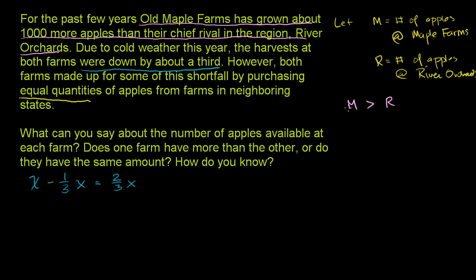So going down by a third is the same thing as multiplying the quantity by 2/3. So if we multiply each of these quantities by 2/3, we can still hold this inequality, because we're doing the same thing to both sides of this inequality, and we're multiplying by a positive number. If we were multiplying by a negative number, we would have to swap the inequality.